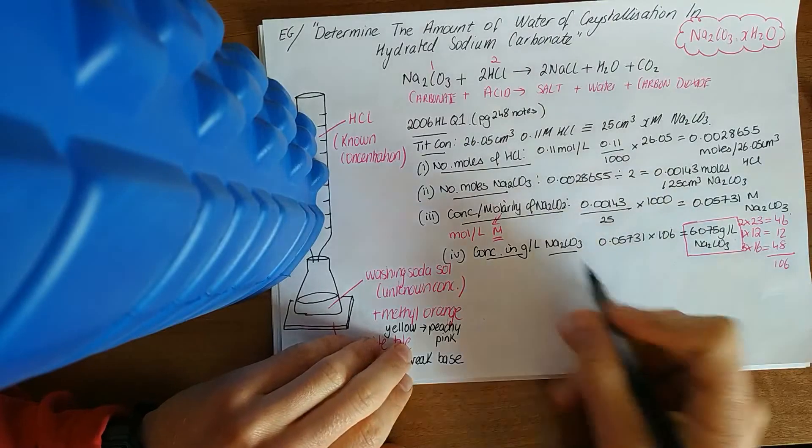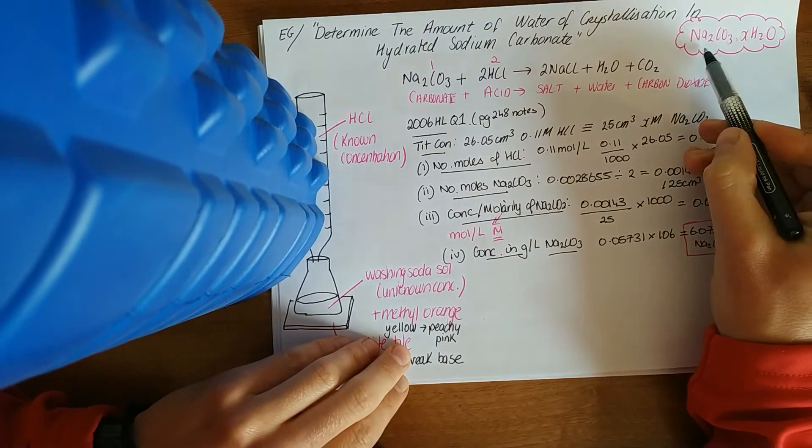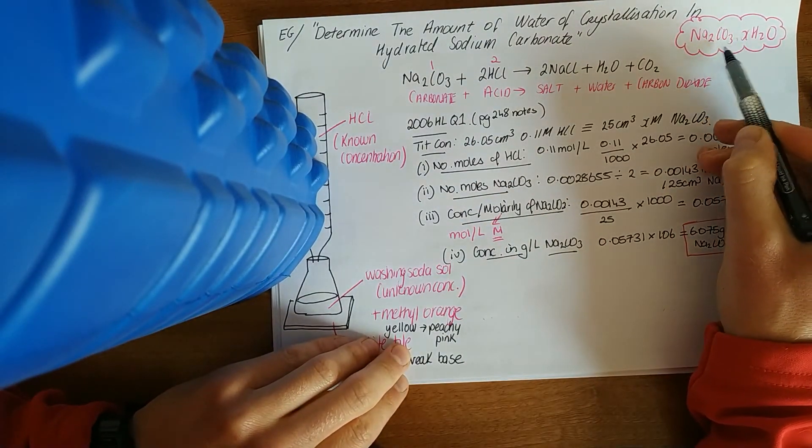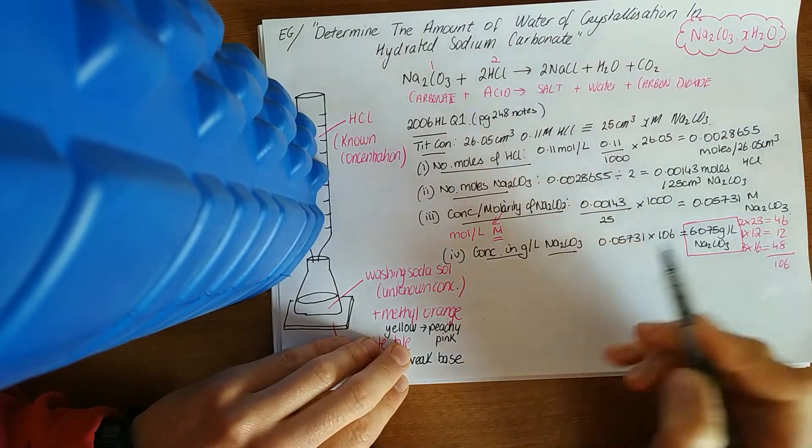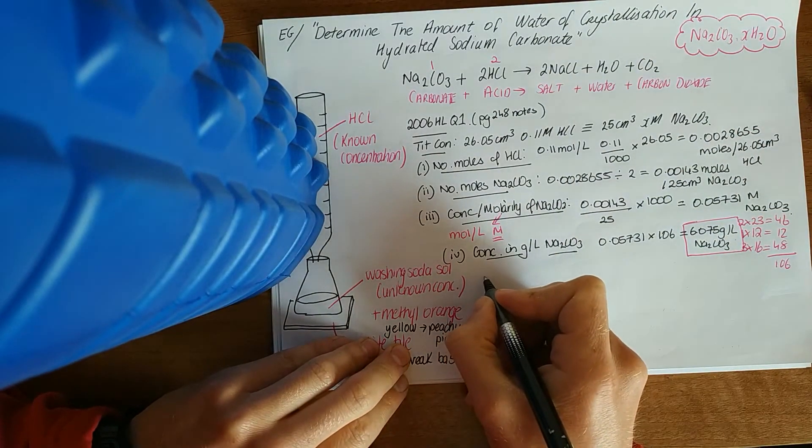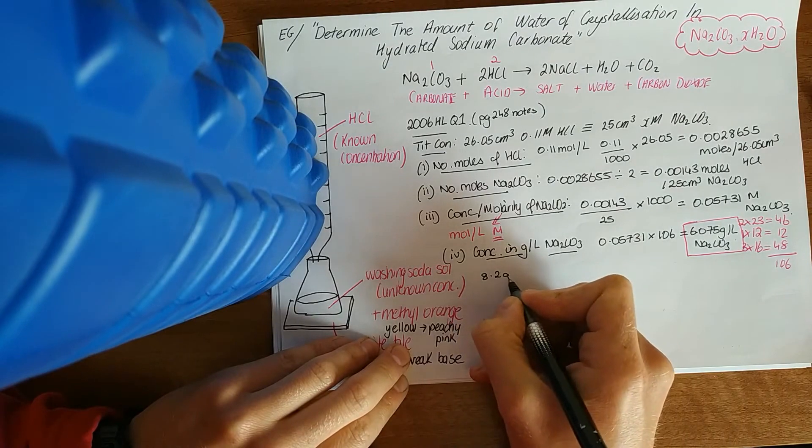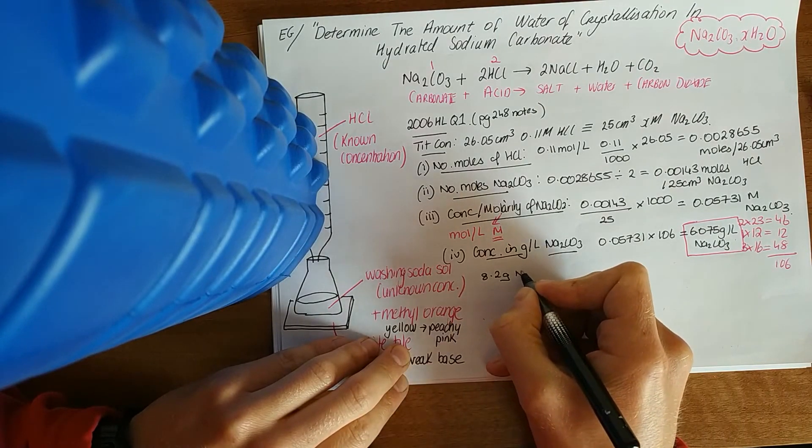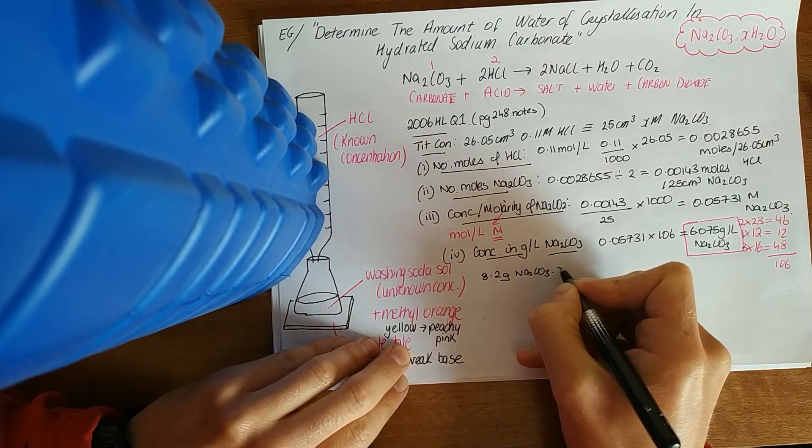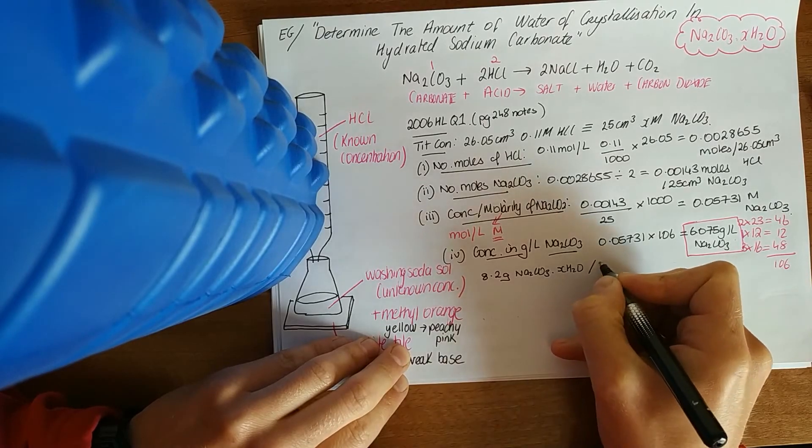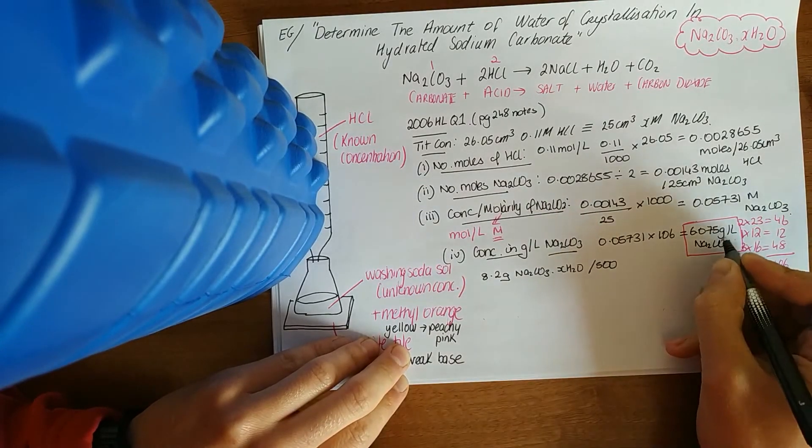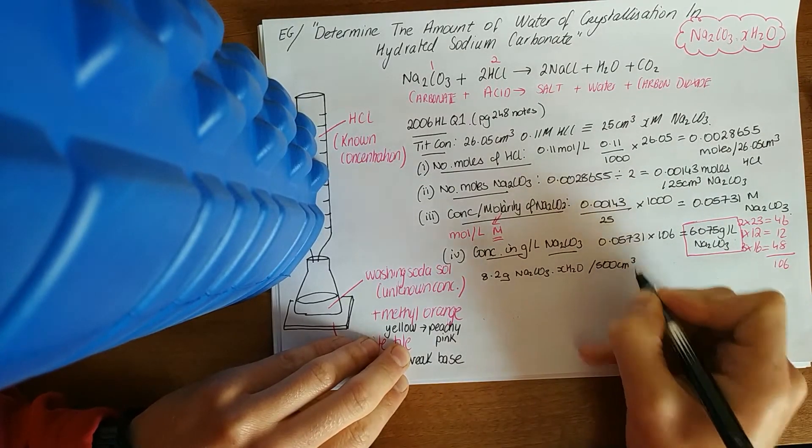This is in a litre, so we know that there's 8.2 grams of these crystals, sodium carbonate and water, in 500 mils. To compare like with like, 8.2 grams Na2CO3 with so much water attached in 500, we want to get it up to a litre. You could simply multiply by 2.